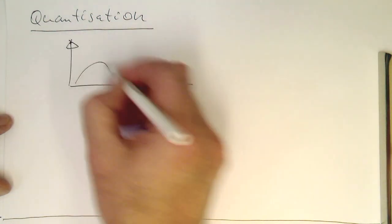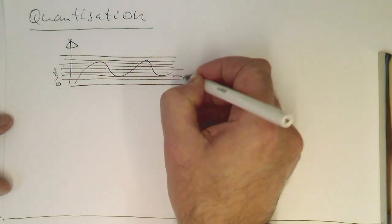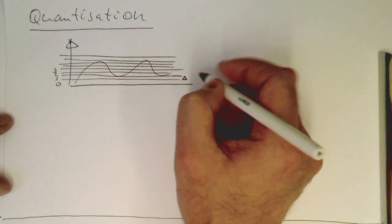If this is our signal here, we're dividing the amplitude into equal regions. One of these steps here, let's call this Delta. This is our quantization step.